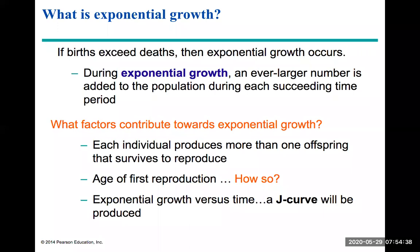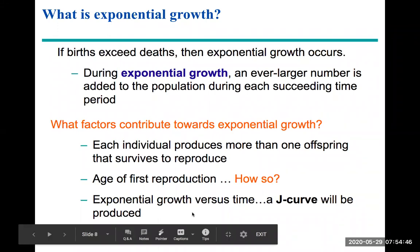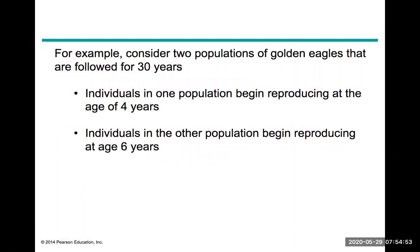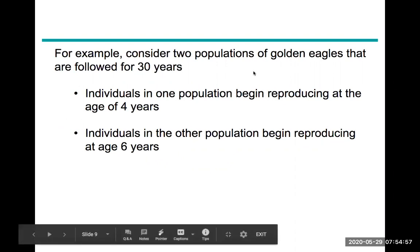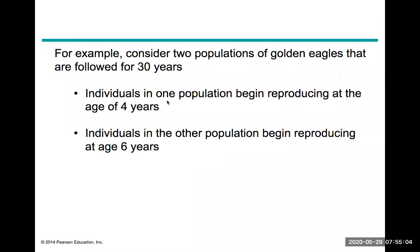Consider two populations of golden eagles tracked for 30 years. Individuals in one population begin to reproduce at age four, while the other population doesn't begin reproducing until age six. The difference is only two years. Which population would you expect to reach exponential growth faster? Let's look at what this looks like graphically.